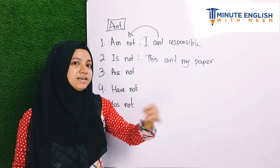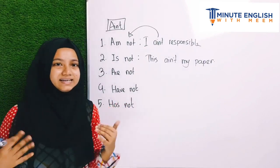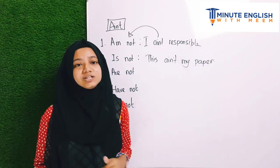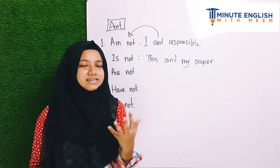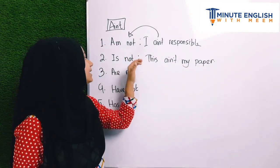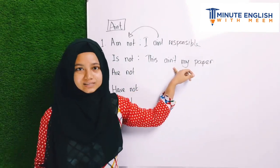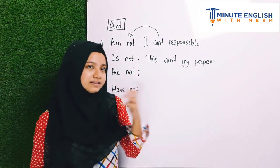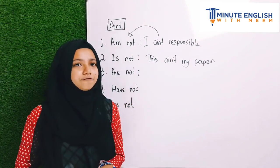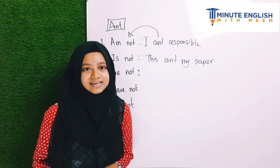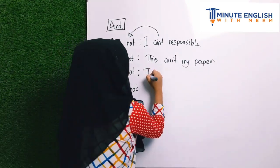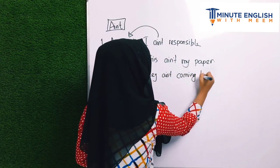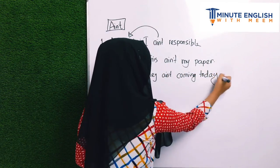Similarly we can say: this ain't my marker, this ain't my dress, this ain't my money bag. For 'he is not' — he ain't something. For example, 'he is not my teacher' becomes 'he ain't my teacher.' 'She is not a bad student' becomes 'she ain't a bad student.' Now 'is not' is replaced by 'ain't.' Moving to 'are not' — for example, 'they are not coming today' becomes 'they ain't coming today.'